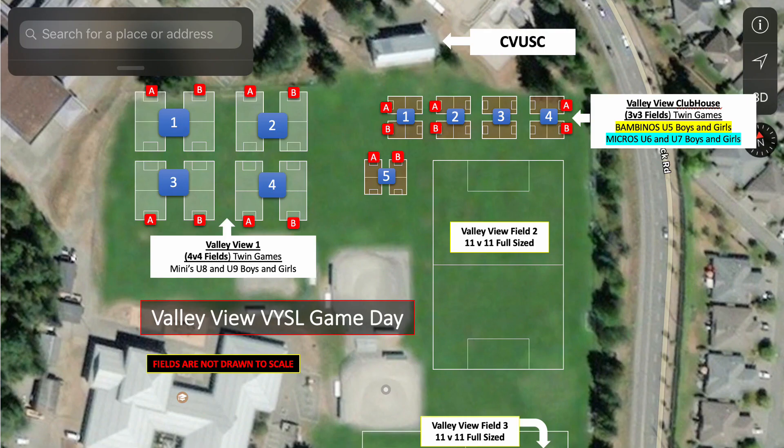This is Valley View, set up at the clubhouse. We have the minis over on Valley View 1 to the left near Mark Gisfeld School, and the micros and Bambinos are out front of the clubhouse. Goals for the micros and minis are kept in the clubhouse storage room, and the goals for the minis will be along the fence line near the parking lot to Mark Gisfeld High School.